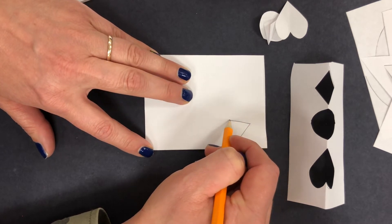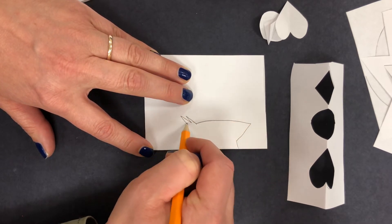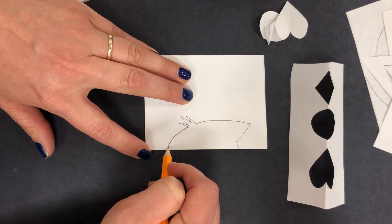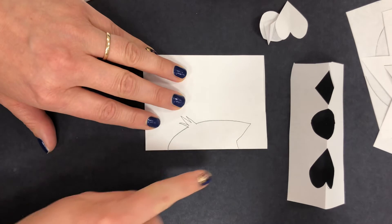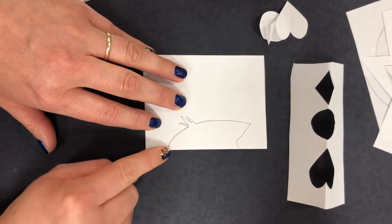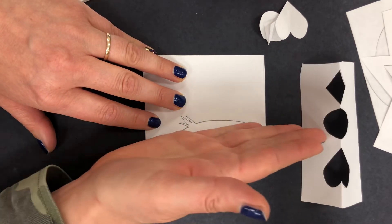The ear, maybe some whiskers. Then when I'm done drawing it, notice I left a gap at the top and the bottom because I don't want to cut the fold all the way off.